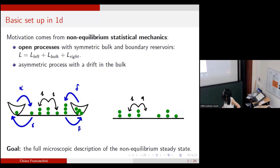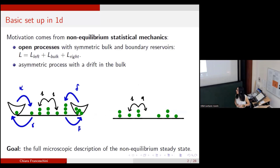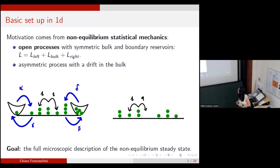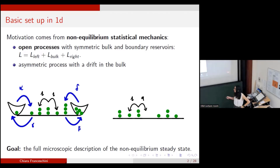The motivation comes from non-equilibrium statistical mechanics, where the idea is that you want to create a system that can be a toy model for non-equilibrium. The classical ways to do that are two. One is where you have a bulk — a one-dimensional finite chain where you have, for example, particles. My main interest is particle systems, but I will show you examples in different contexts. You add two external reservoirs at the endpoints of the bulk. These reservoirs can add or take particles from the bulk, creating a birth-and-death process.